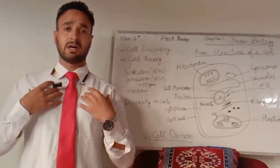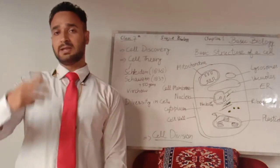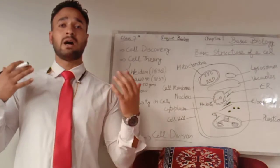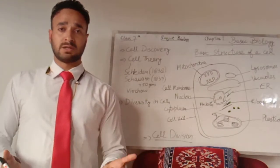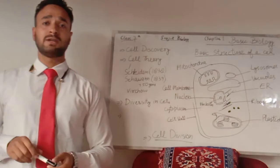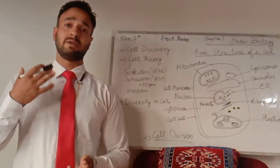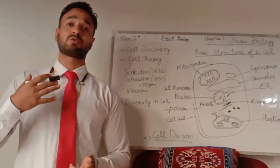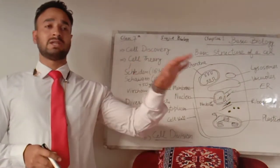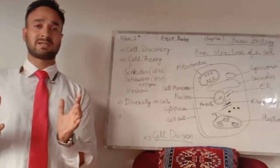We human beings are made up of millions and billions of cells, but we cannot see those cells with the naked eye. So we need microscopes to see those cells. Before we discovered the cell, we first came to know about the invention of the microscope, because to see the cell we need the microscope.